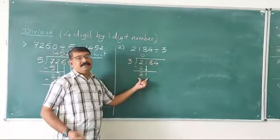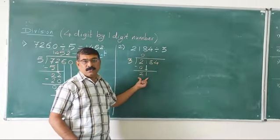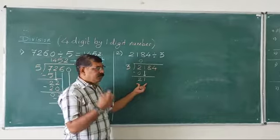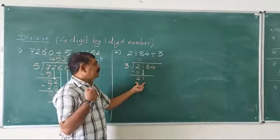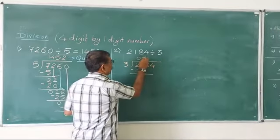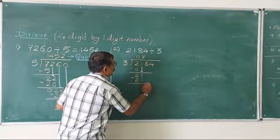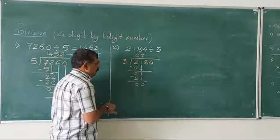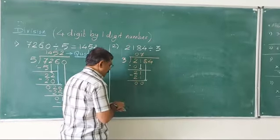We can divide 21 by 3. 3 ones are 3, 3 twos are 6, 3 threes are 9, 3 fours are 12, 3 fives are 15, 3 sixes are 18, 3 sevens are 21. So here will be 7, and here will be 21. We subtract and get 0. The next digit is brought down, so it becomes 8.